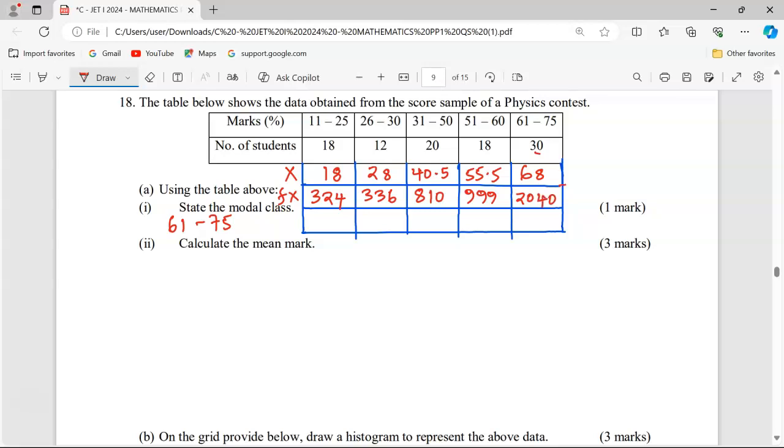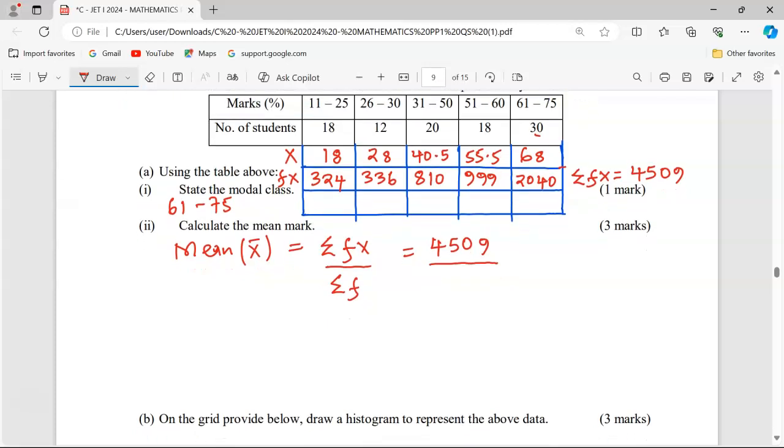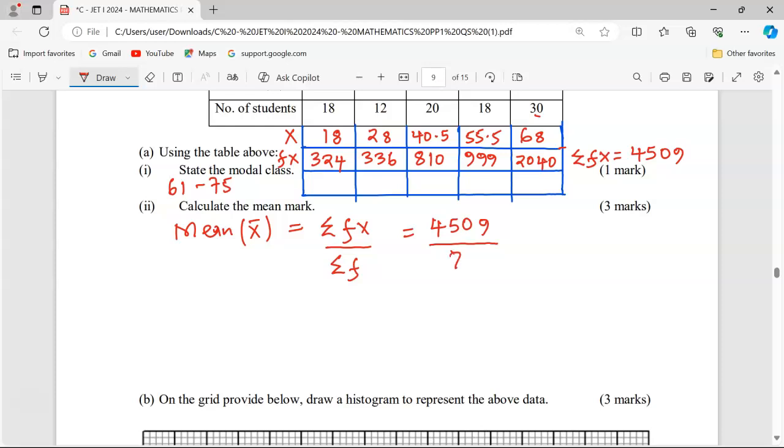Now we can calculate the addition of all products of f and x, which gives us 4509. The mean is calculated by the summation of f times x divided by the summation of f. So we have 4509 divided by 98, which is 18 plus 12 plus 20 plus 18 plus 30. When divided, we get 46.01 to four significant figures. That is the mean mark.